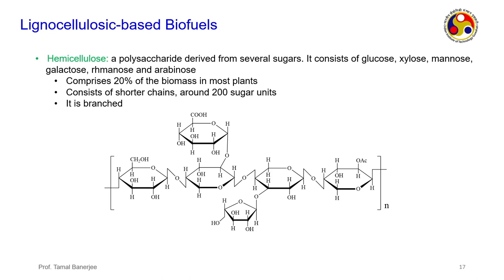Hemicellulose is a polysaccharide derived from sugars — it consists of glucose, xylose, mannose, galactose, rhamnose, and arabinose. It comprises about 20 percent of biomass and consists of shorter chains of around 200 sugar units. Compared to cellulose, hemicellulose has shorter chains and is not crystalline, so when any pretreatment method is used it is the first component to be separated out. Its structure is branched, unlike the linear cellulose.